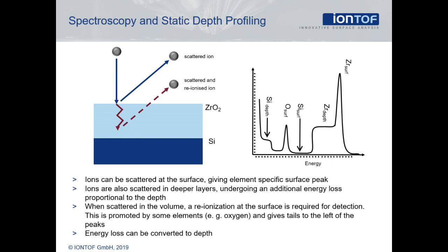We also have to consider the charge state of the primary ions. Once the noble gas ion enters the solid, it is neutralized due to its large ionization potential. An electron in the solid will always gain energy by neutralizing the noble gas ion. Consequently, the projectile travels through the solid in a neutral state. Only when leaving the solid does it have a chance of being re-ionized and detected. The probability of re-ionization is always smaller than the survival probability of noble gas ions scattered at the surface.